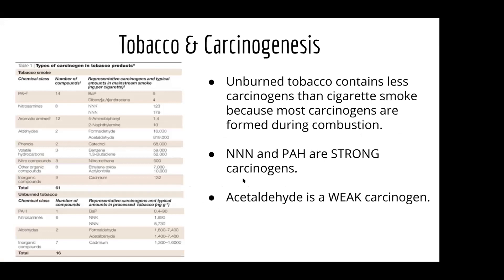What makes tobacco a good starter for cancer is that it contains carcinogens when it's burned. When tobacco is burned, the carcinogens are created and you inhale them when you smoke. Two of the strongest carcinogens in tobacco are NNN and PAH. There's a list of various chemicals and the amounts found in cigarette smoke — some have really high values, some are much lower, and some like acetaldehyde are weak carcinogens.